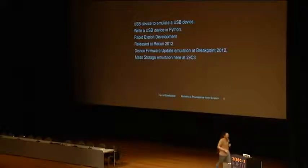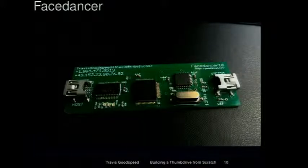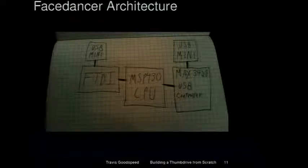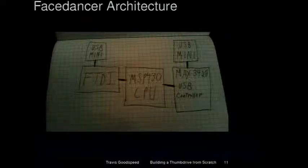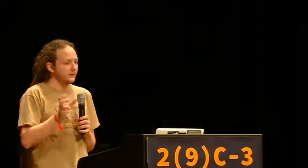Here I'll be presenting mass storage emulation for the same platform. The modern FaceDancer is about the size of a thumb drive with two USB device connectors. The upcoming model adds USB host. The architecture is just an FTDI chip — the same as in an outdated Arduino — connected to an MSP430, which connects to a MAX3420, a USB device controller. In the upcoming model we use a MAX3421, which can also do host. The Python client software shuffles packets over the FTDI chip into the MSP430, which handles the 3420 chip.